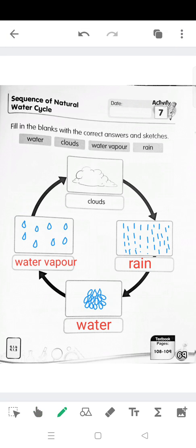So that will be the cycle. Clouds become heavy and fall as rain. Rain water flows back into rivers and seas. It becomes water. And then the water will evaporate and rise up into water vapour.